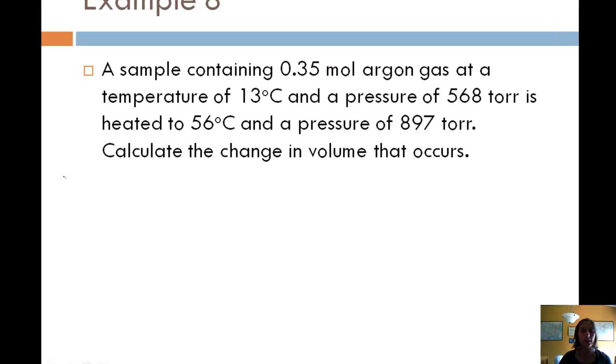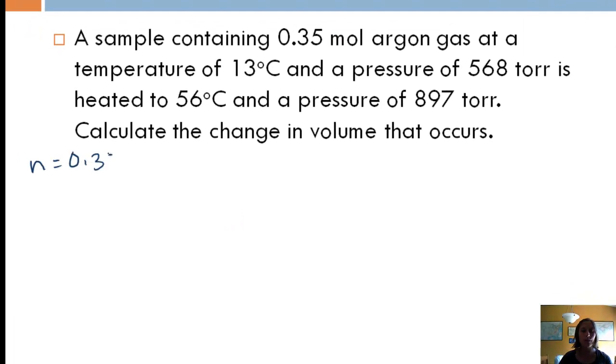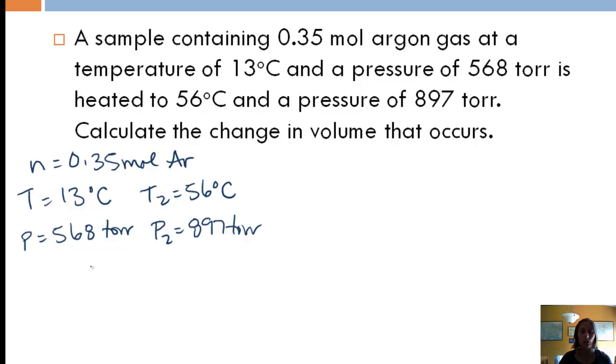Let's look at one more example. We've got a sample containing 0.35 moles of argon gas, and its temperature is 13 Celsius, and we have a pressure of 568 torr. We're going to heat that to 56 Celsius, so now we're changing our temperature, and we're also changing our pressure. And we want to calculate the change in volume. Well, change in volume is V2 minus V1. So I need the volume at the final conditions and I need the volume at the initial conditions.